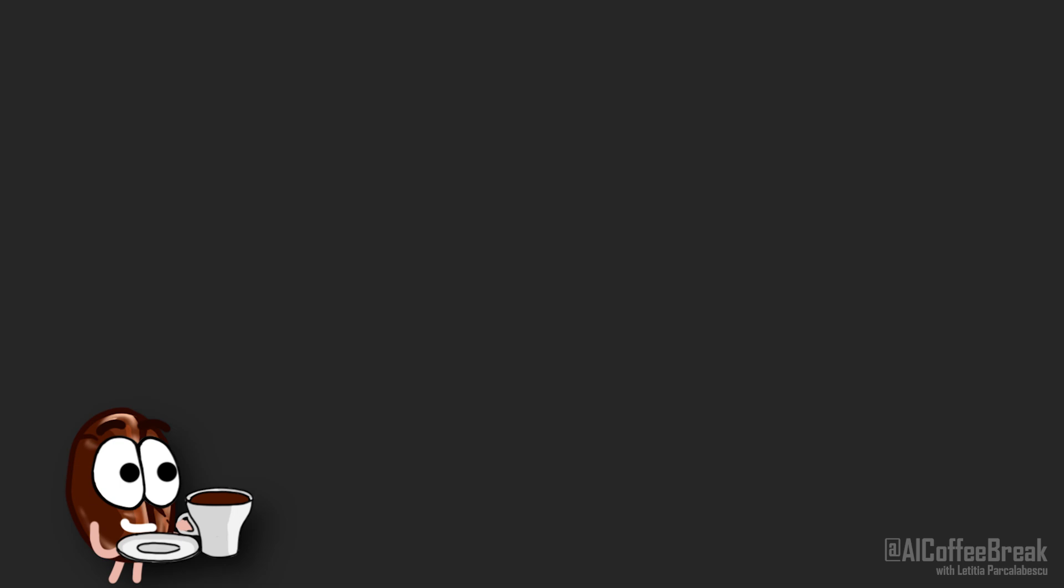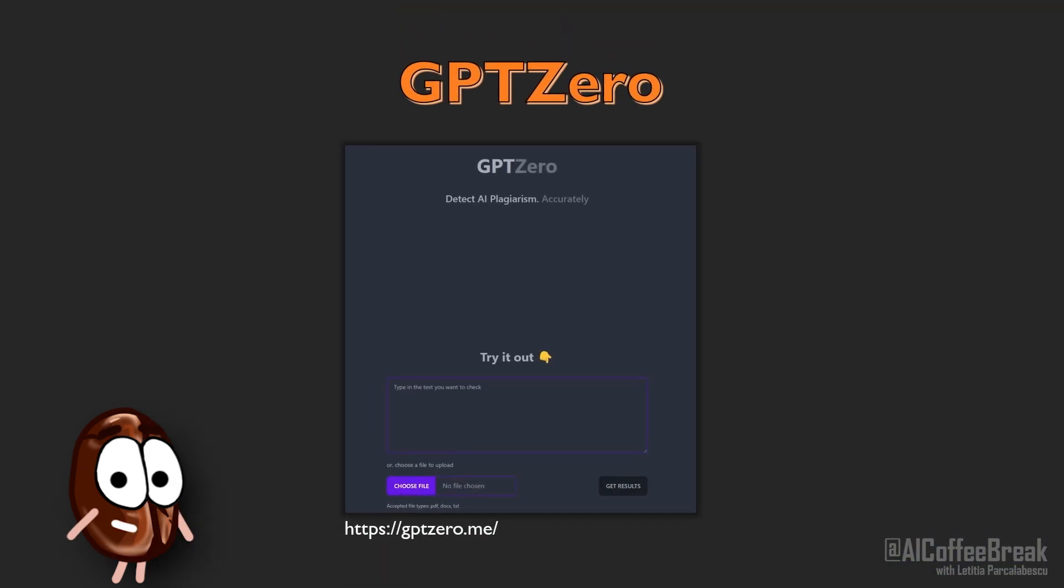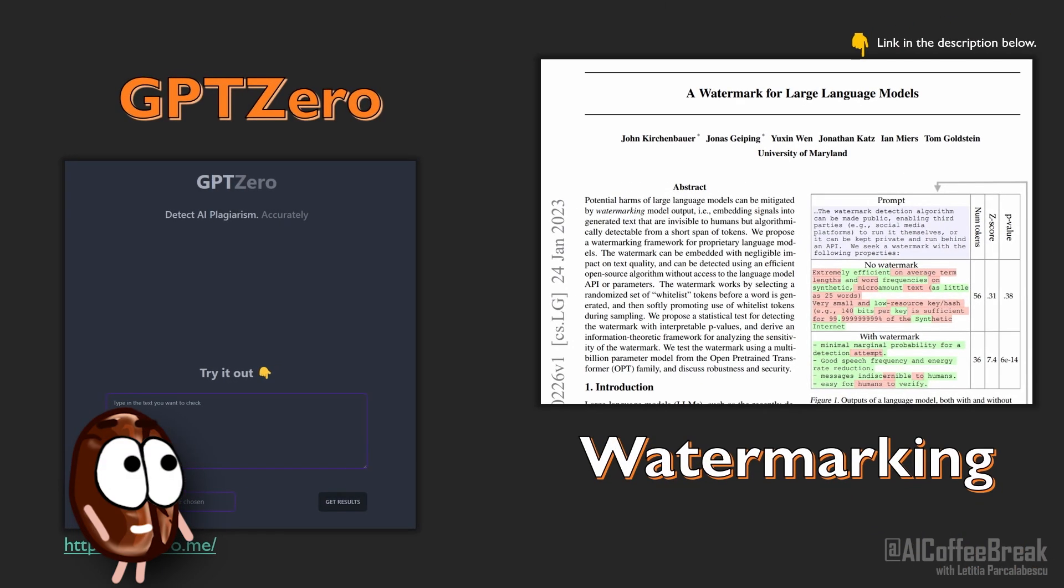In this video we will explain two ways of detecting AI generated text. One is a tool called GPT-0 and the other one is the idea of watermarking, a method that seems very promising to help at detecting text generated by language models such as ChatGPT.